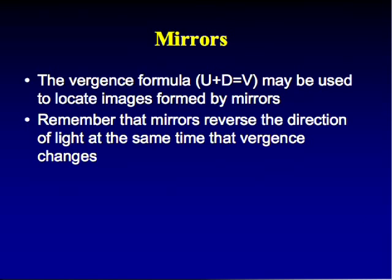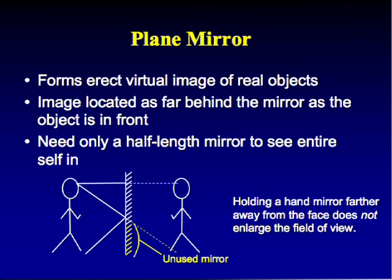We can apply u plus d equals v to mirrors, remembering the mirror reverses the direction of light. A plane mirror forms an erect virtual image as far behind the mirror as the object is in front. A useful consequence: you only need a half-length mirror to see your entire body. Also, as you move farther from a plane mirror the image also moves away, so the field of view is determined by mirror size, not distance.